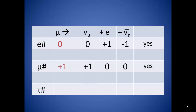Finally we can use the tau numbers. A muon has a tau lepton number of zero. A muon neutrino also has zero. An electron has a tau lepton number of zero, and the electron antineutrino has a tau lepton number of zero. The numbers on the left add up to zero, and the numbers on the right add up to zero. So the tau lepton numbers are conserved.